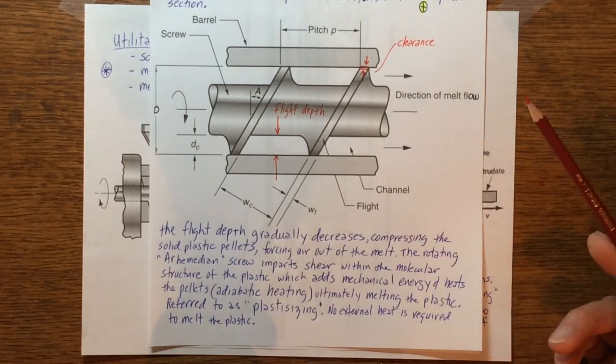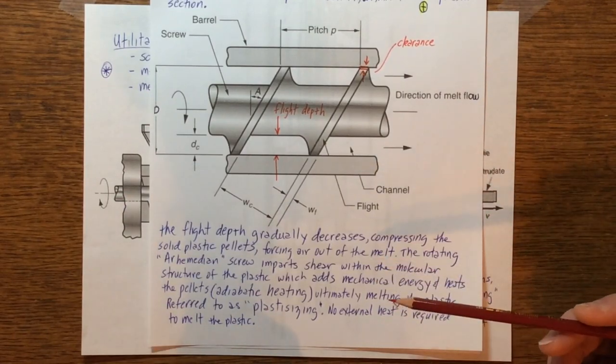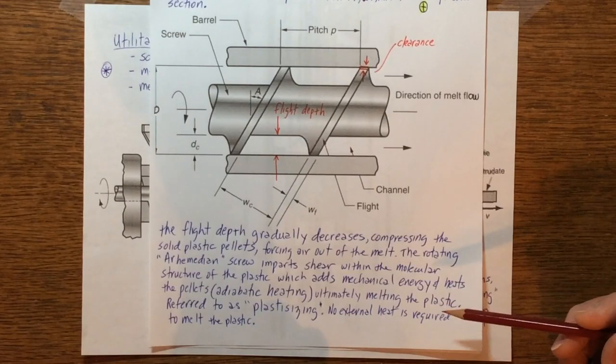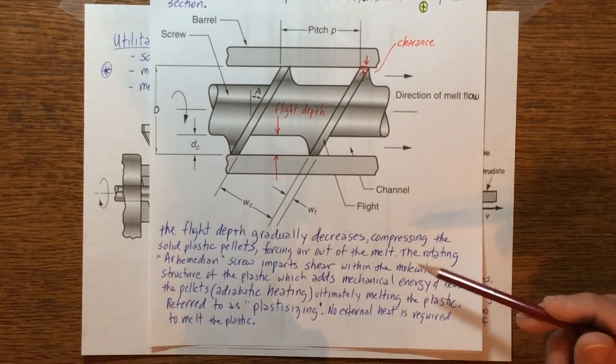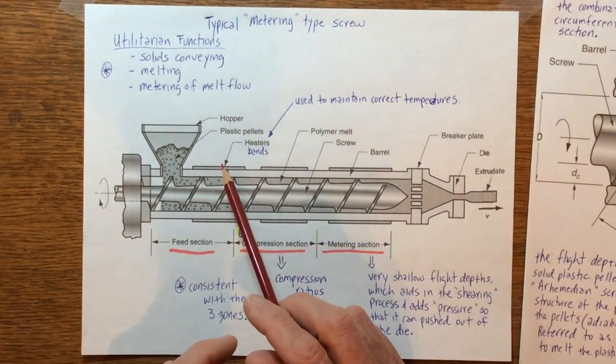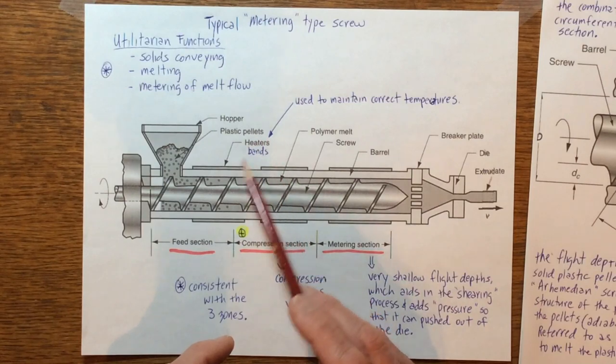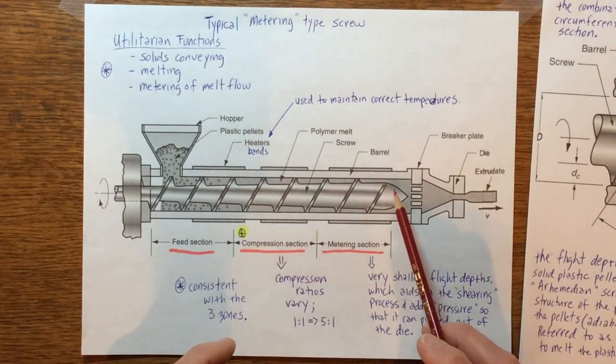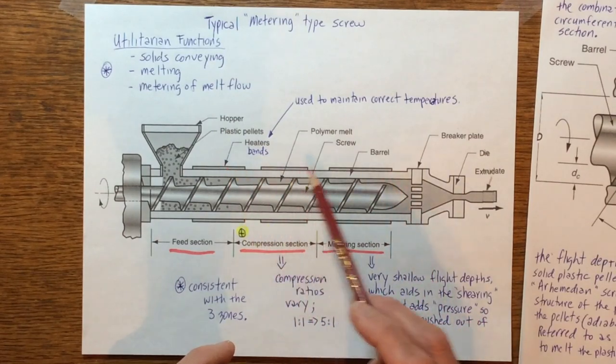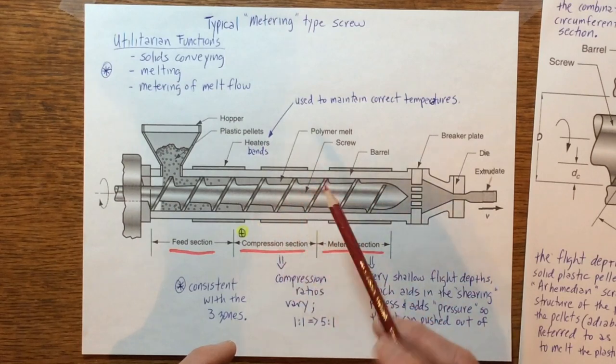The interesting part about this is that there is no actual external heat applied to really try to melt this polymer because the polymers melt at different temperatures. Some of the linear and low density polyethylenes can melt at 350-375, where some of the higher ones like polycarbonate, polyamide nylon could be all the way up close to 500 degrees.